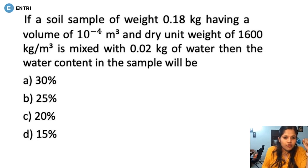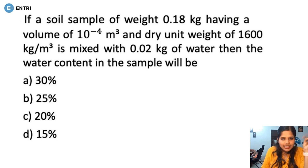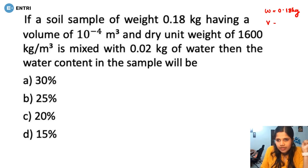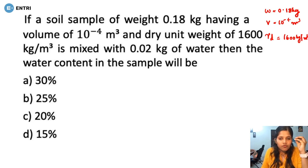First question: if a soil sample of weight 0.18 kg having a volume of 10 raised to minus 4 m³ and dry unit weight of 1600 kg/m³ is mixed with 0.02 kg of water, then the water content in the sample will be.